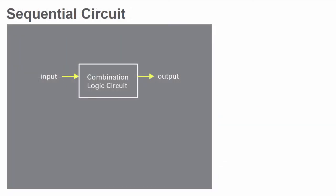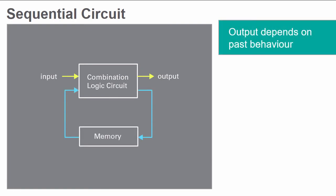A sequential circuit is different than a combinational logic circuit, in that its output depends not only on the present combination of inputs, but also on the past behavior of the circuit.